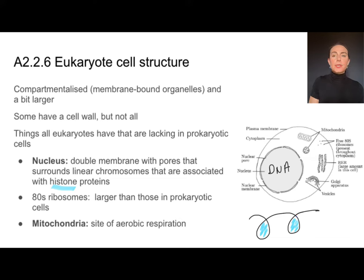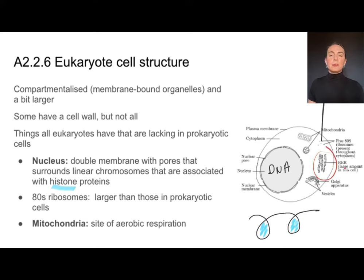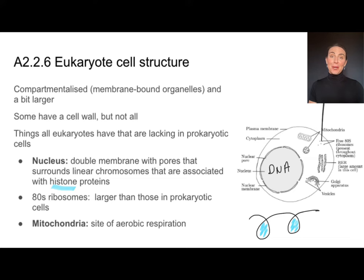In eukaryotes we're also going to find ribosomes, but they are not 70S ribosomes like in prokaryotes — they have a different size. These are 80S ribosomes; they're a bit larger. All eukaryotes are going to have mitochondria. Some eukaryotes will also have other structures like a chloroplast or endoplasmic reticulum, but not all of them. It's important to note what is characteristic to all eukaryotes — and for that, we want to be thinking mitochondria.